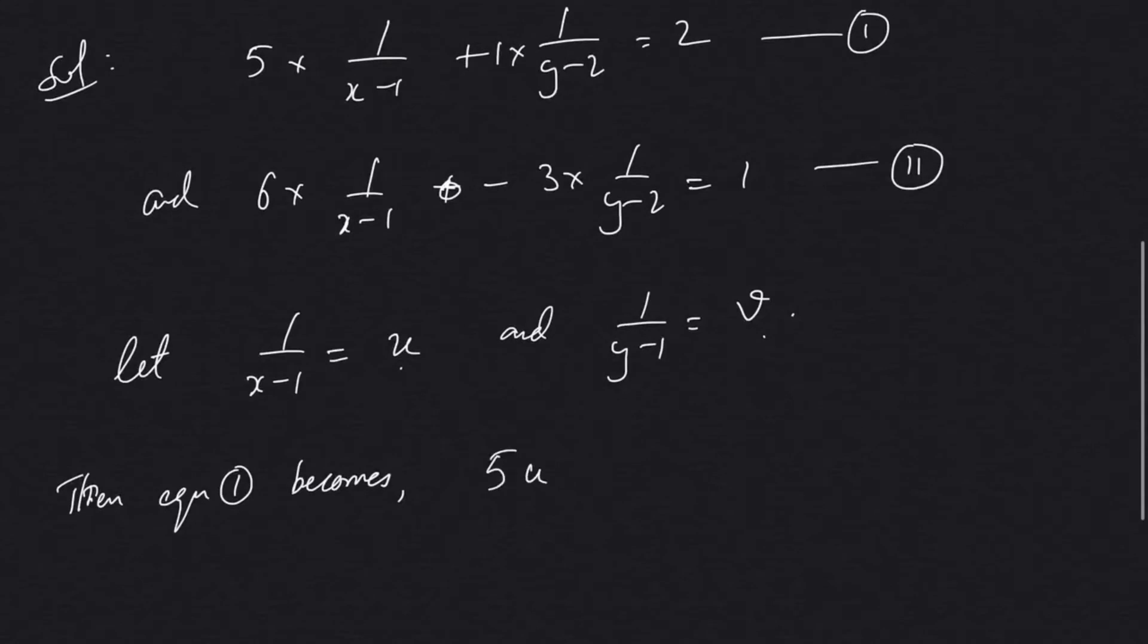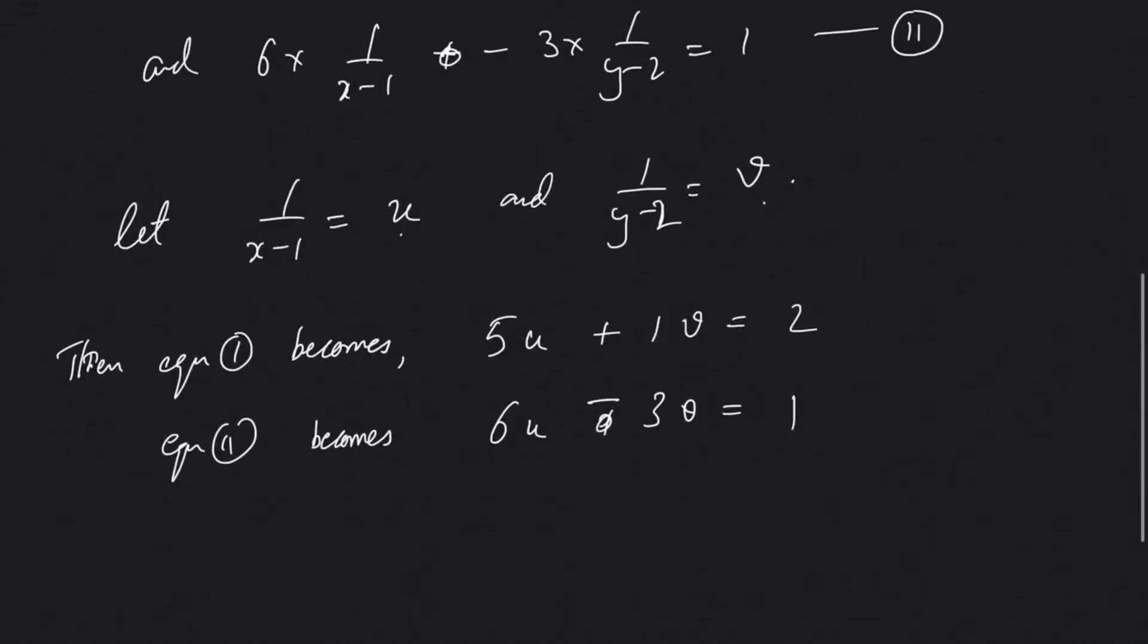We can take some other variables, not only u and v. Let 1 over x minus 1 equal to u and 1 over y minus 2 equal to v. Then equation 1 becomes 5u plus 1v equal to 2.